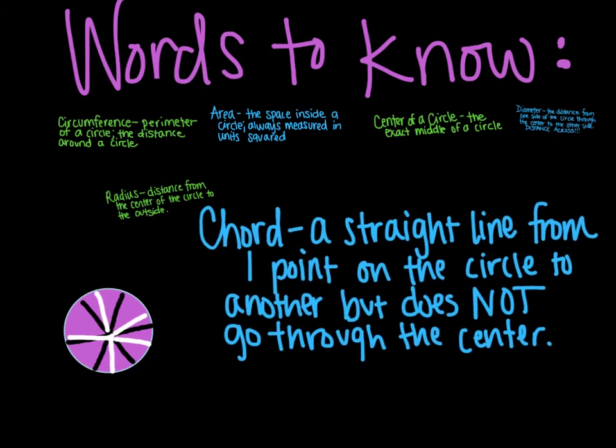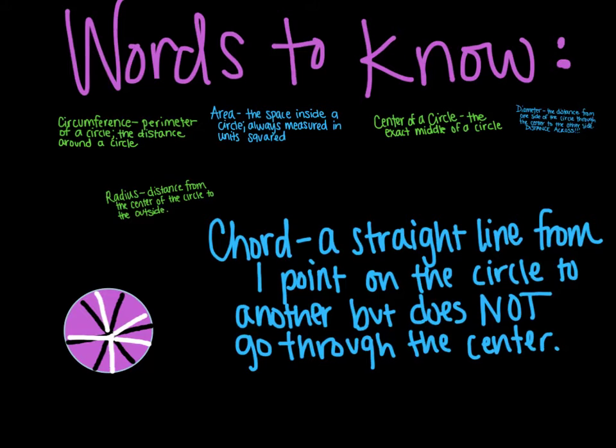Last one is a chord. That is a straight line from one point on the circle to another. But it does not go through the center. So, let me get rid of this stuff. What the chord is, if here's your center, the chord is a straight line, okay, and it just doesn't go through the center. So that's an example of a chord. This is an example of a chord. This is a chord. As long as it doesn't go through the center and is a straight line.